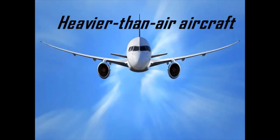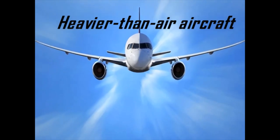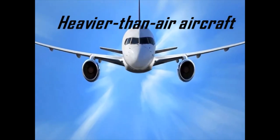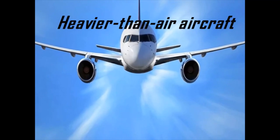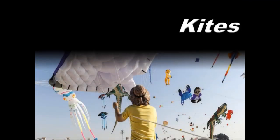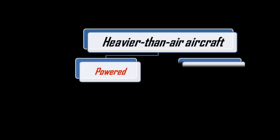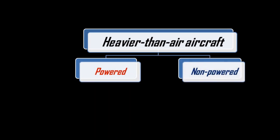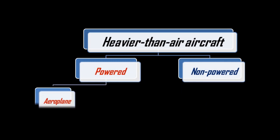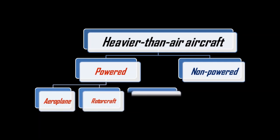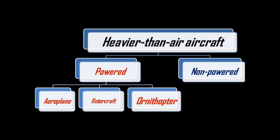Now it's time to learn about heavier-than-air aircraft. This type of aircraft must have a power source such as an engine to provide thrust and obtain lift force. Heavier-than-air aircraft are of two types: powered heavy airships and non-powered heavy airships. Non-powered heavy airships are known as gliders.